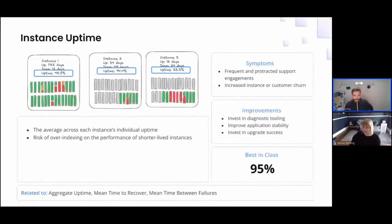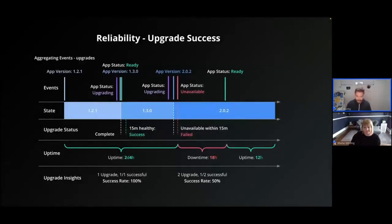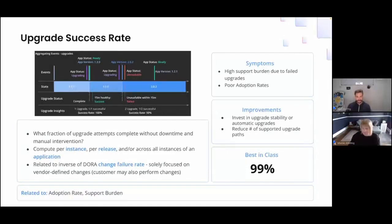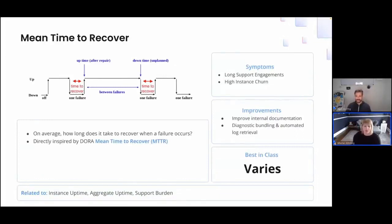Upgrade success rate is the percentage of upgrade attempts that complete without downtime or manual intervention. This is a high-level overview of how complex upgrades are and how impactful it can be to know your upgrade success rate. If you're focusing on adoption rate and investing in upgrade stability, you should see a high upgrade success rate close to 99%. And mean time to recover — from the DORA metrics — measures how long it takes you to resolve something that goes wrong, or for customers to self-resolve. Improving your diagnostic tooling and internal documentation can really help improve mean time to recover.